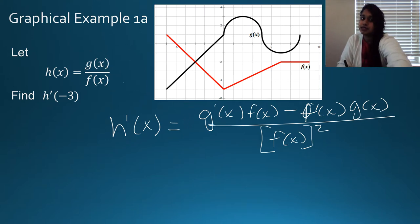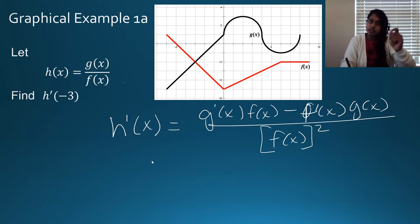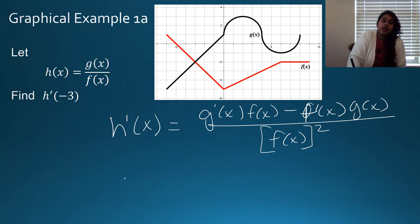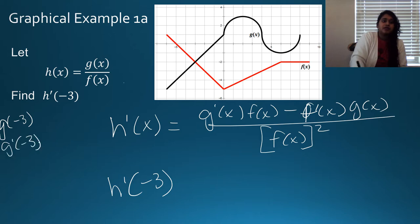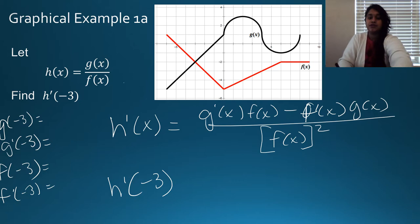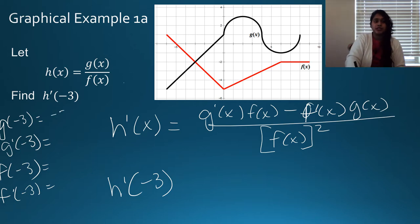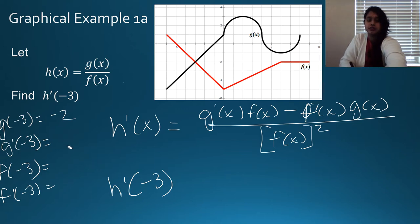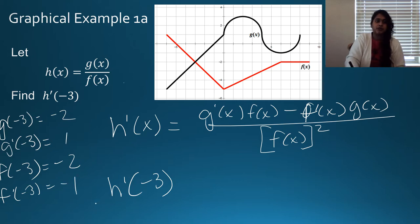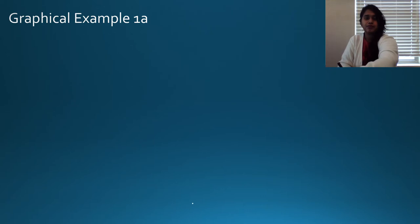Know your phrases. To find h prime of negative 3, you need g of negative 3, g prime of negative 3, f of negative 3, and f prime of negative 3 — declare all of these. We look at negative 3 on the graph and figure out all those values. Function values come from the graph; derivative values are slopes. So we read off: negative 2, negative 2, positive 1, negative 1 — plug all of that in to get your answer.